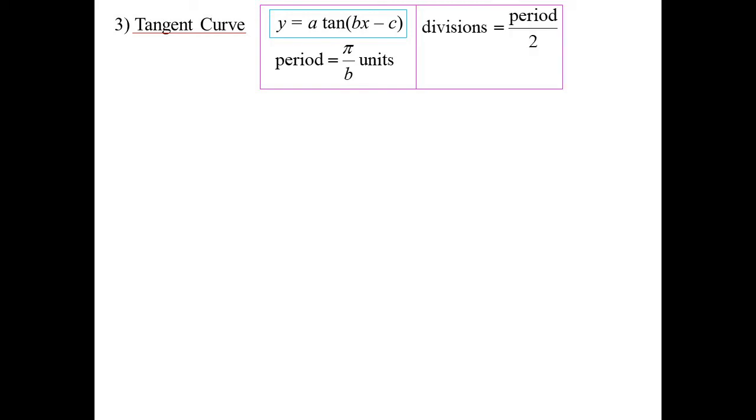Let's try tan. So the generalized tan curve. Now, there's a difference here. Period is only π/b. Remember? The period of the basic tan curve is 180 degrees, or π. So we divide it π divided by b.